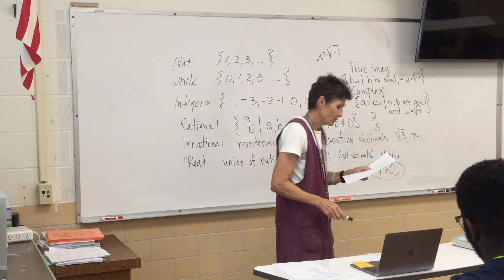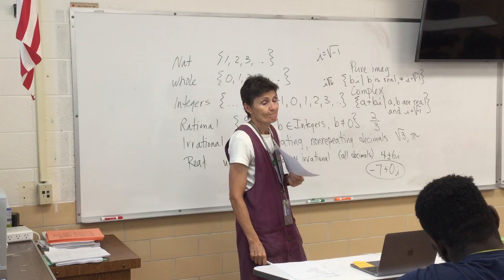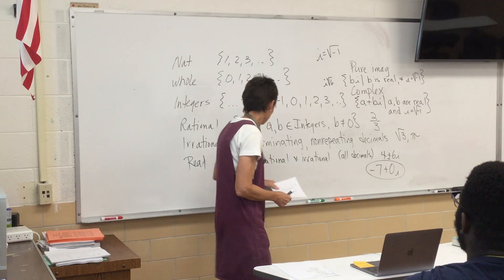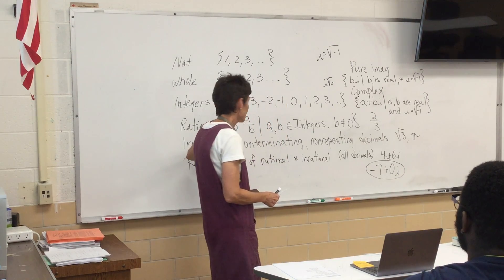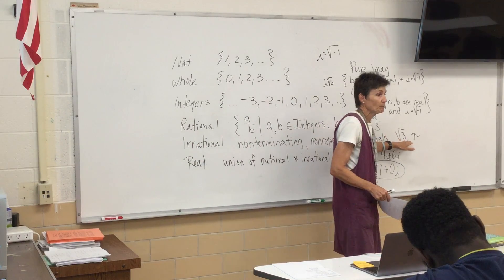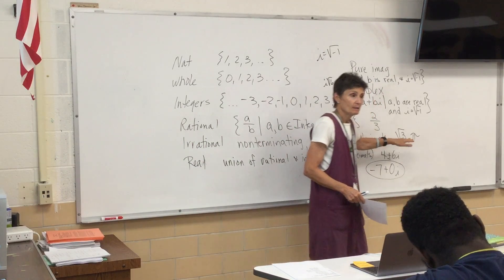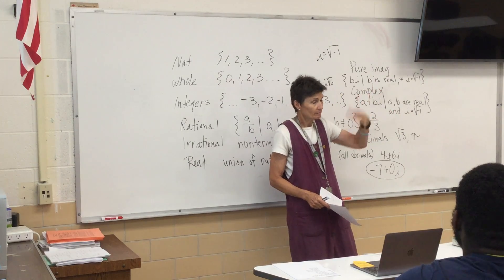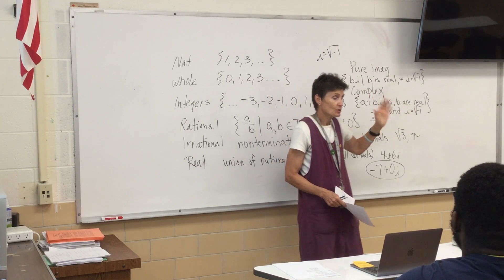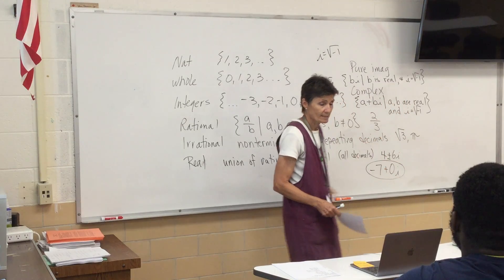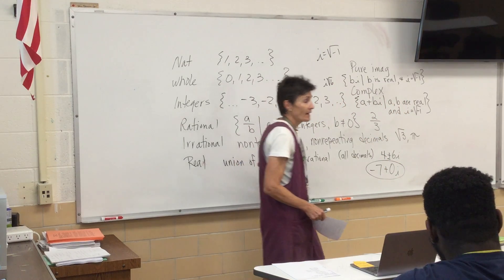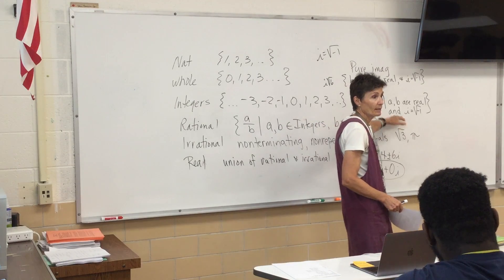What about square root of 32? It would be irrational — definitely irrational, because any radical that doesn't simplify or completely disappear is going to end up being irrational. So square root of 32 is irrational, real, and complex.